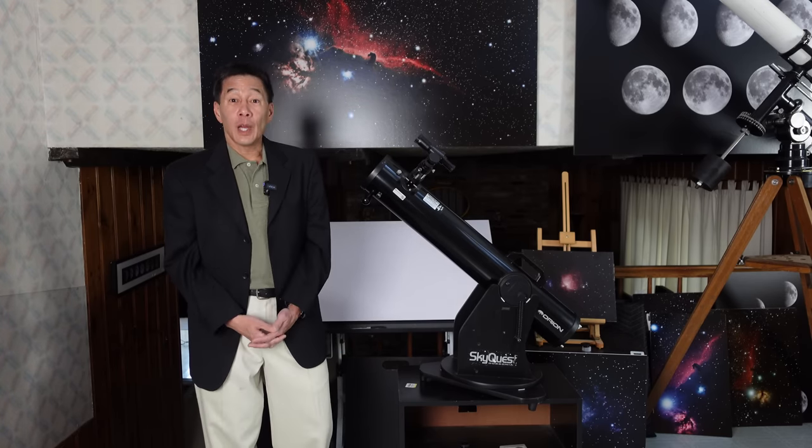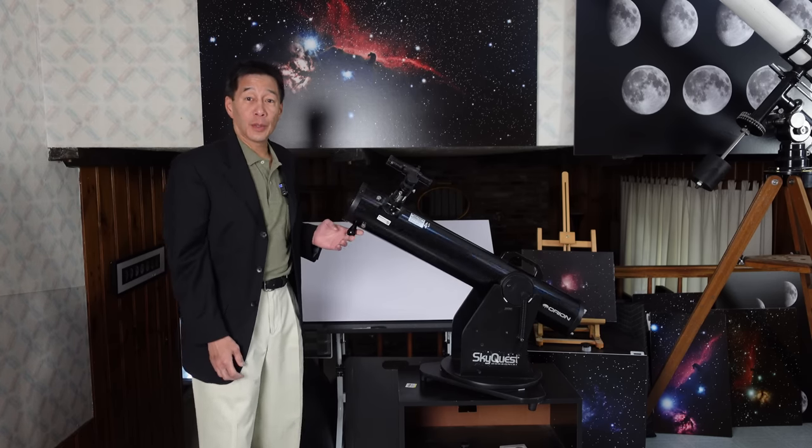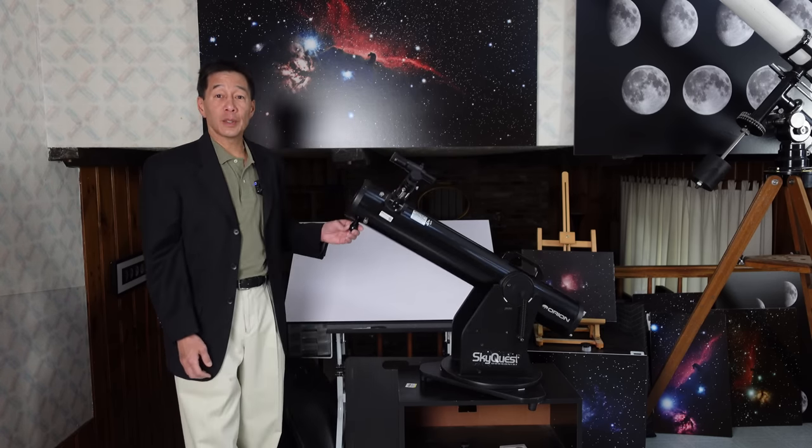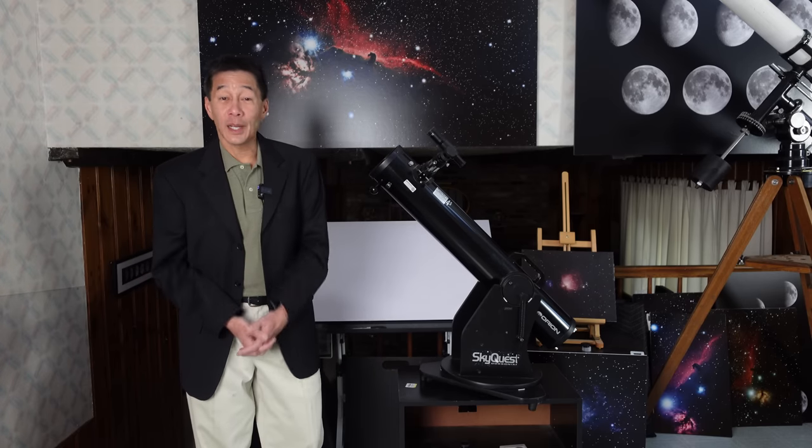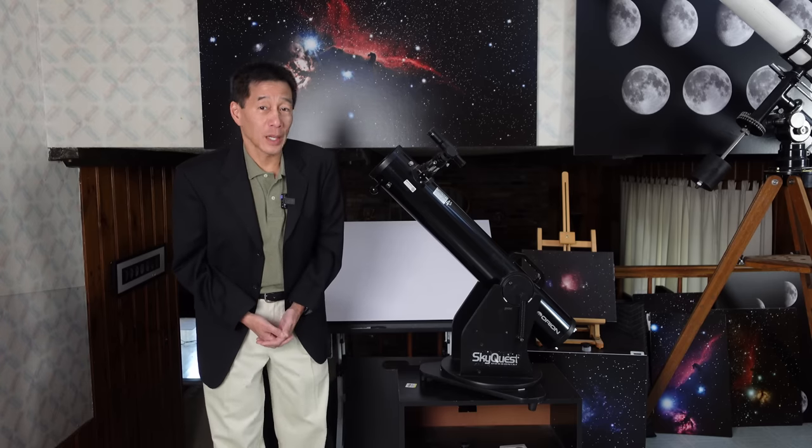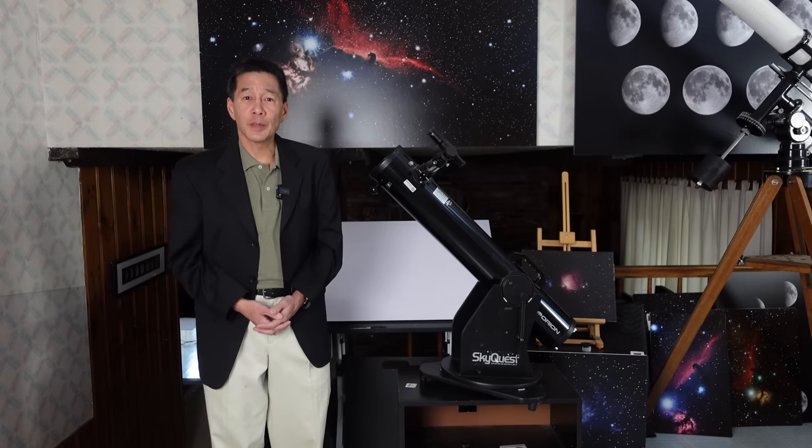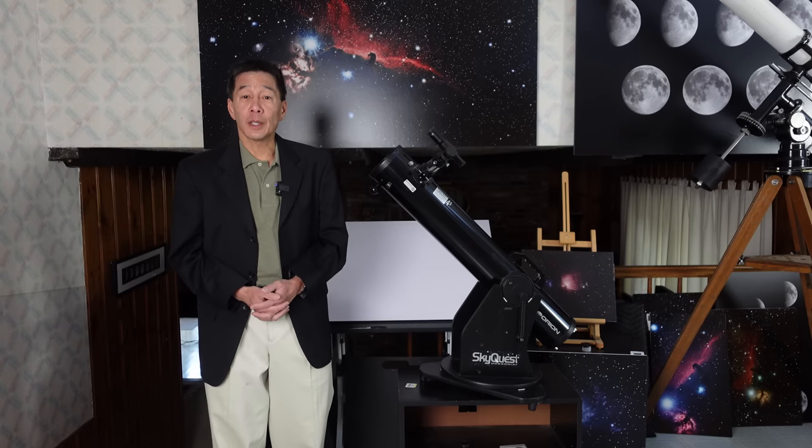It's a four and a half inch F8 Newtonian reflector on a Dobsonian mount. It's a mount that moves left and right and up and down. It's the baby in the XT line and it's probably the one you're spending the least amount of time looking at in the Orion catalog. But that would be a mistake. This is a full-fledged member of the XT family and it's definitely worth your consideration.